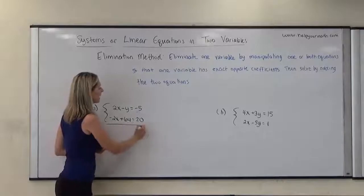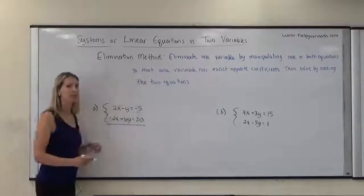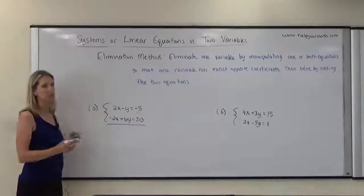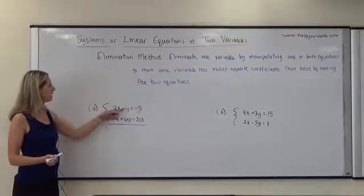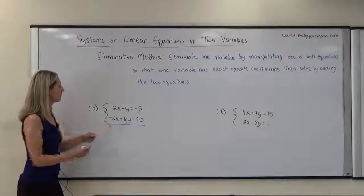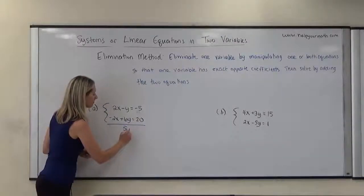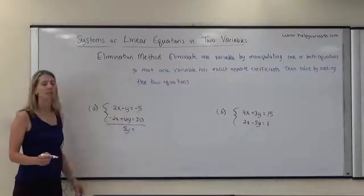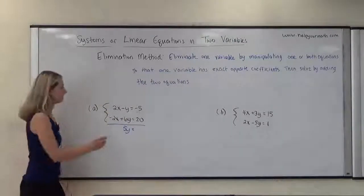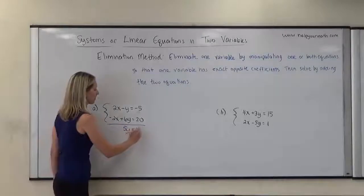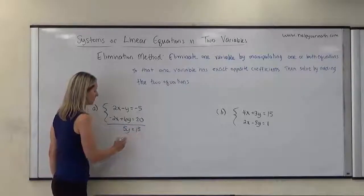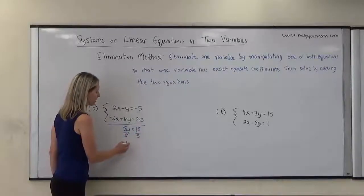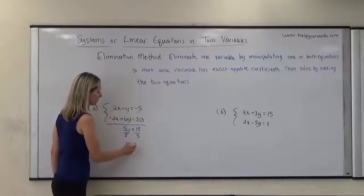When we combine these, we are just adding straight down. So 2x plus negative 2x is 0. Negative y plus 6y is 5y. And negative 5 plus 20 is 15. From here, we can divide both sides by 5 to determine the value of y, which is 3.